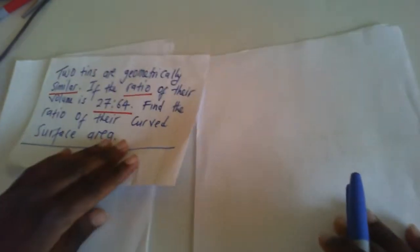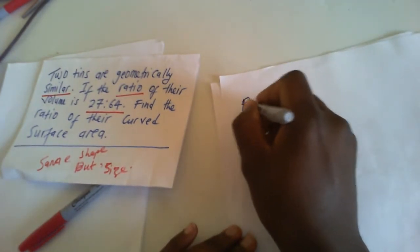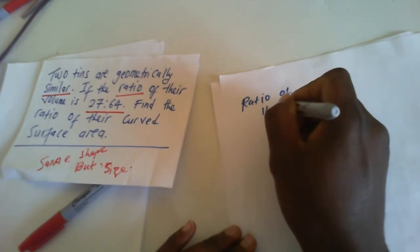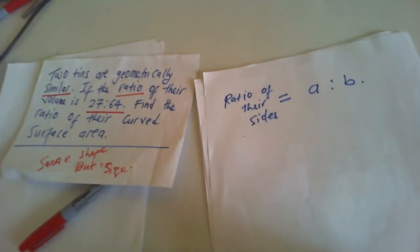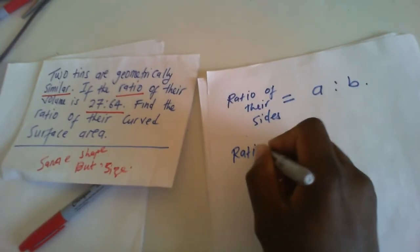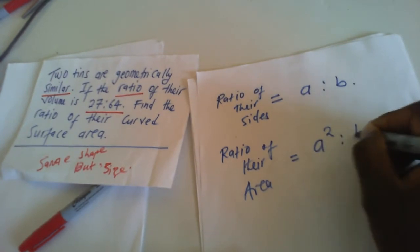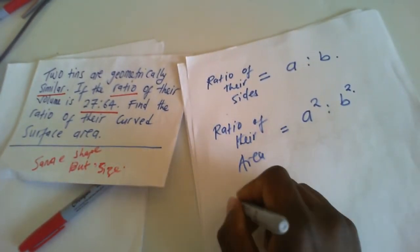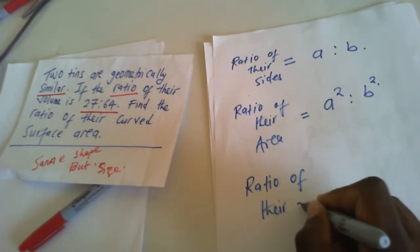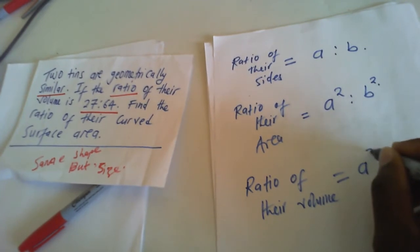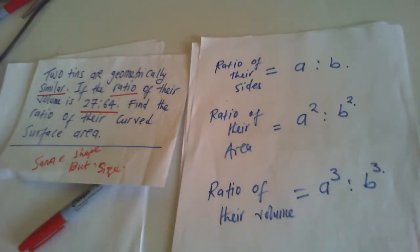One key fact about similarity: if two objects are similar and we take the ratio of their sides to be A to B, then the ratio of their area is A squared to B squared, and the ratio of their volume is A cubed to B cubed.